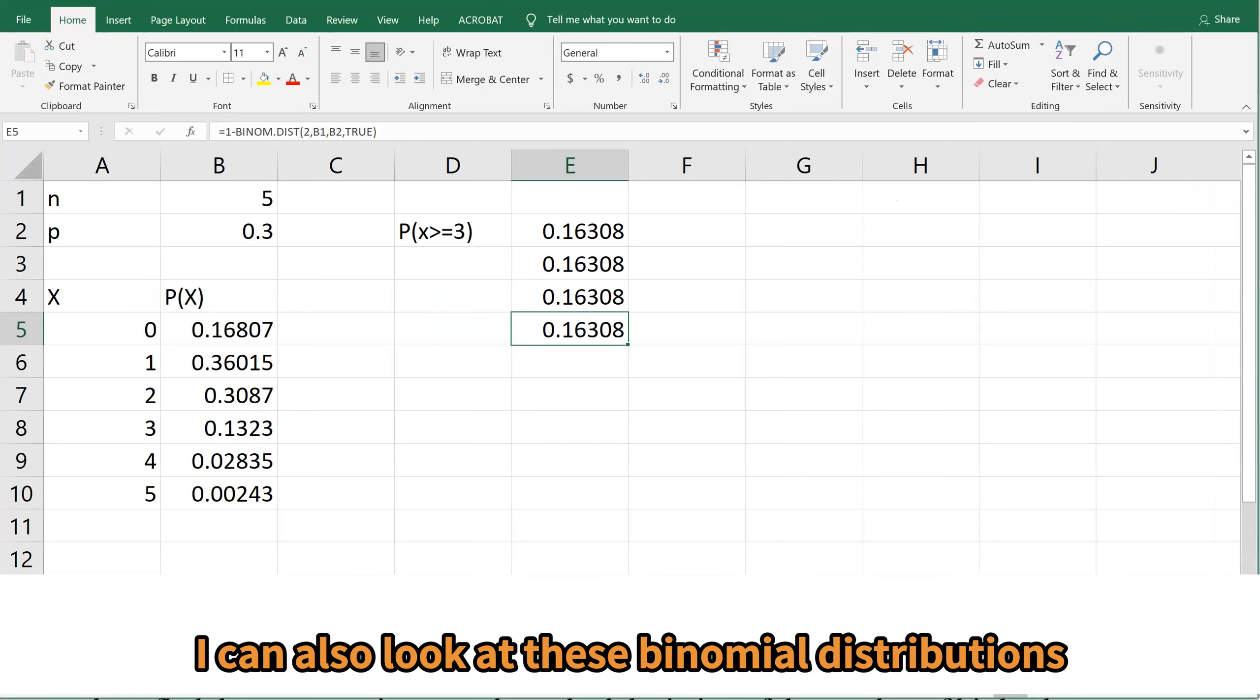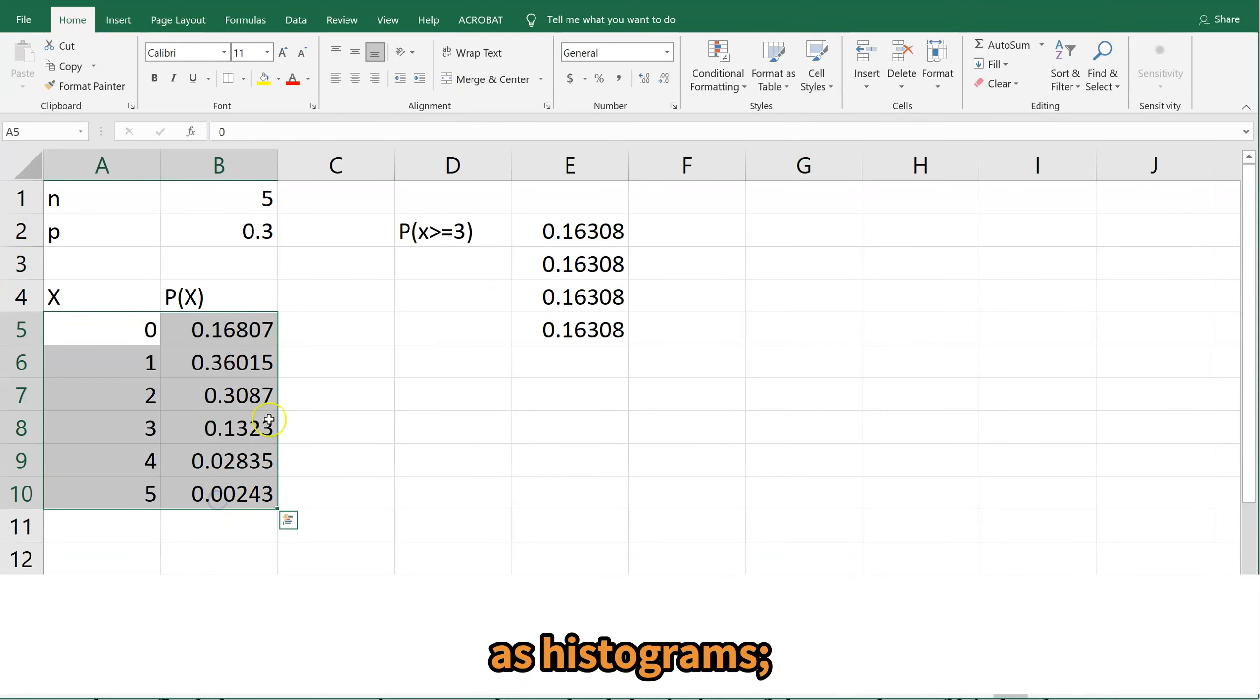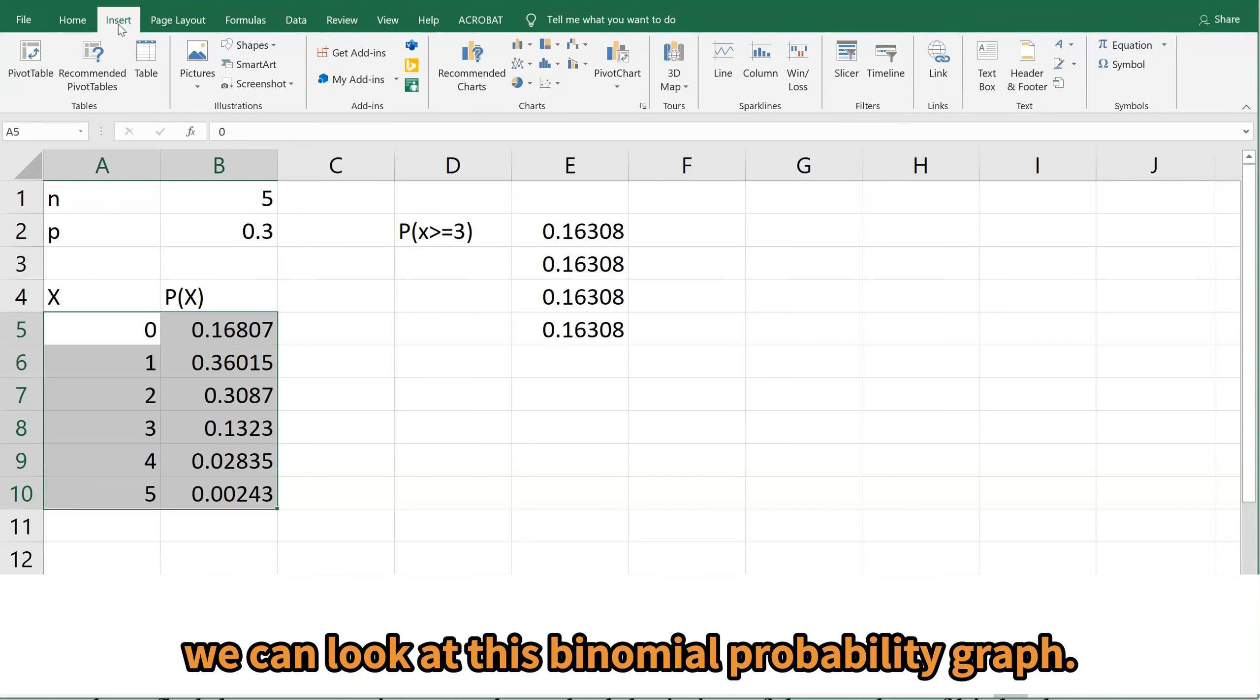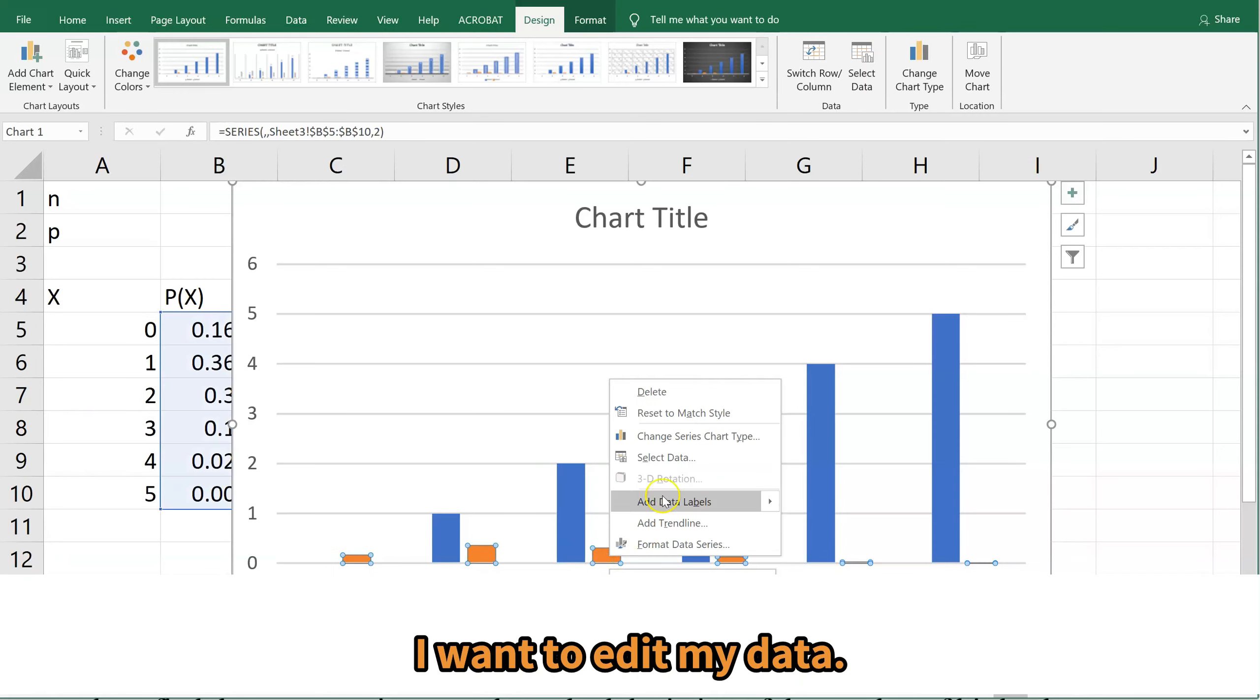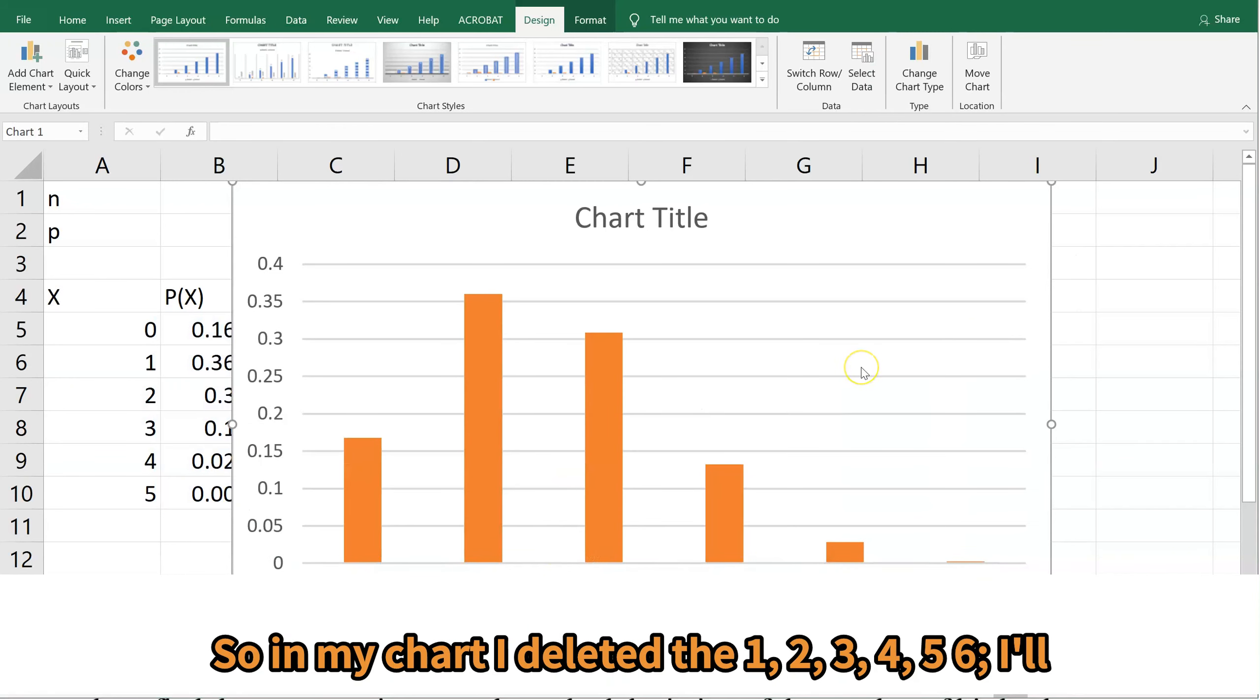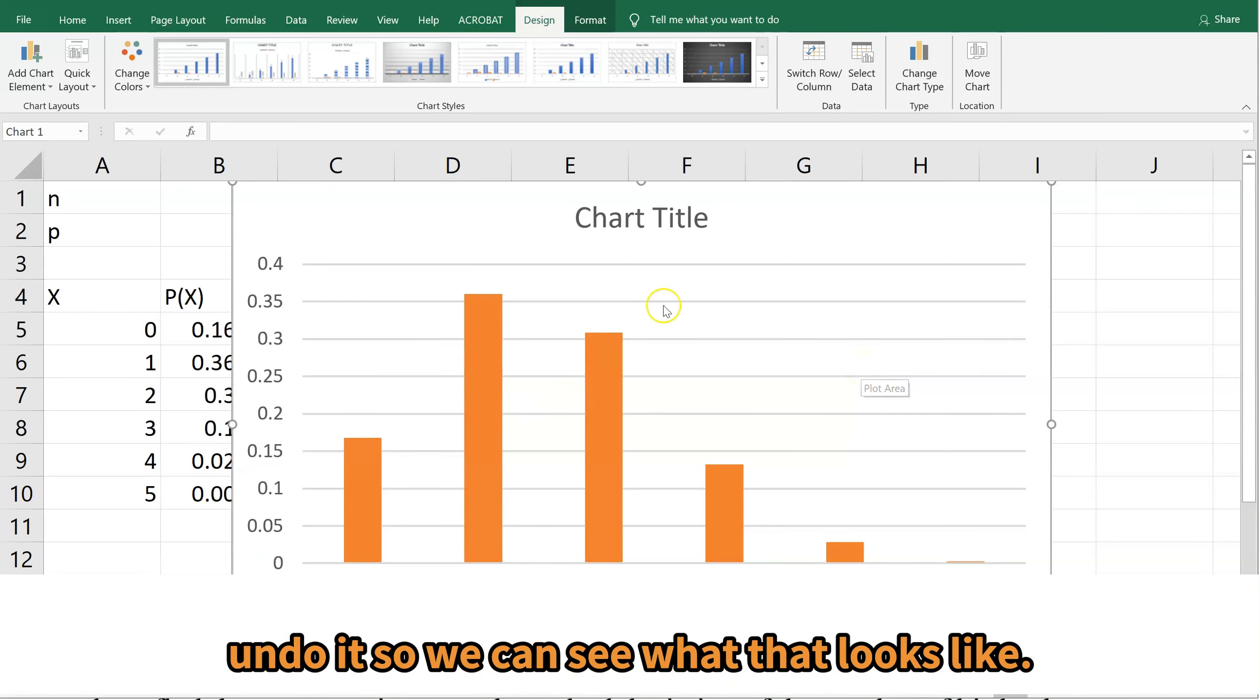I can also look at these binomial distributions as histograms. We can look at this binomial probability graph. So I can select my 2D column and I want to edit my data.